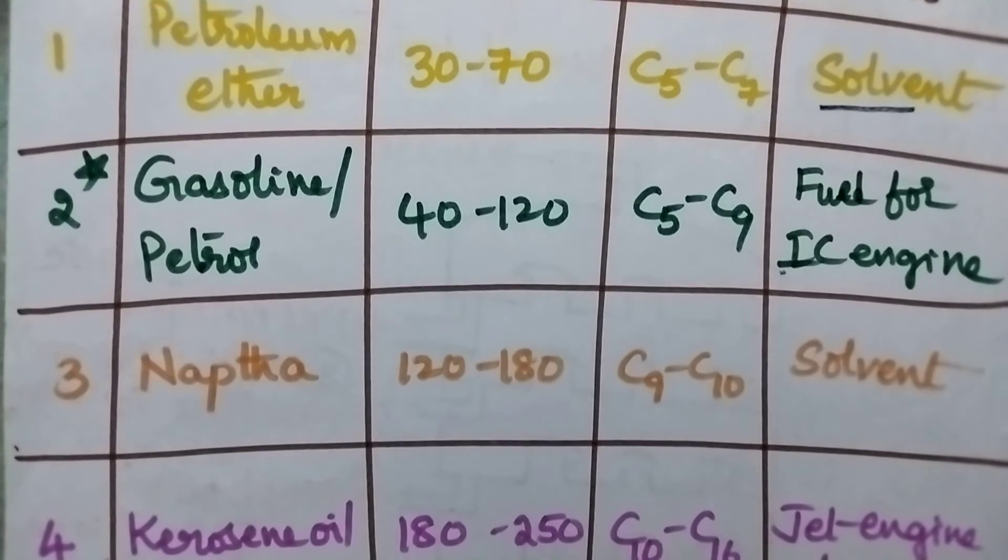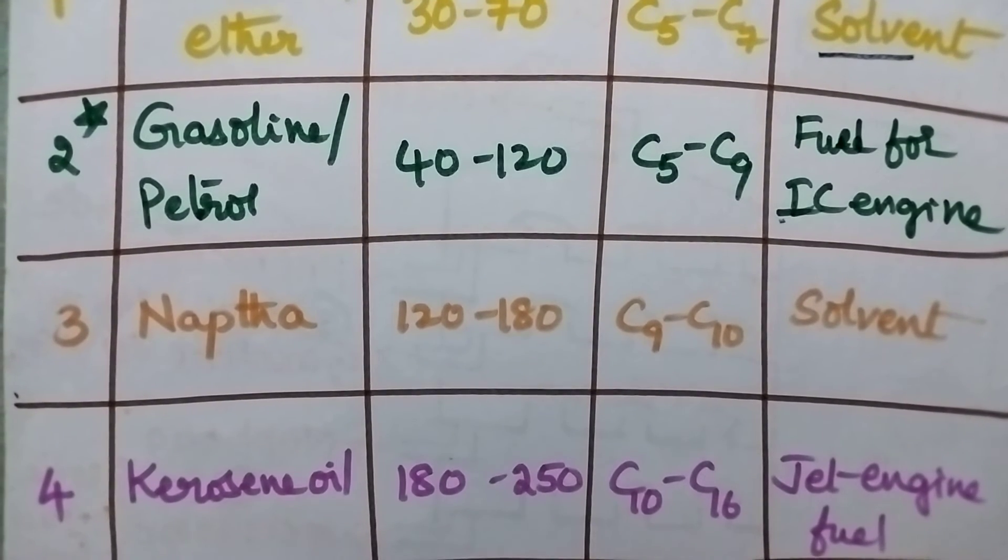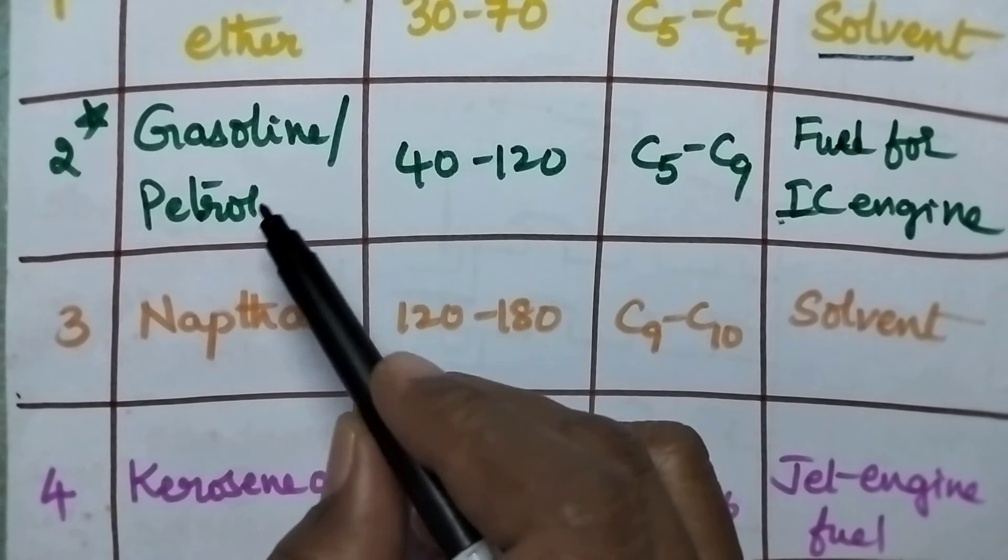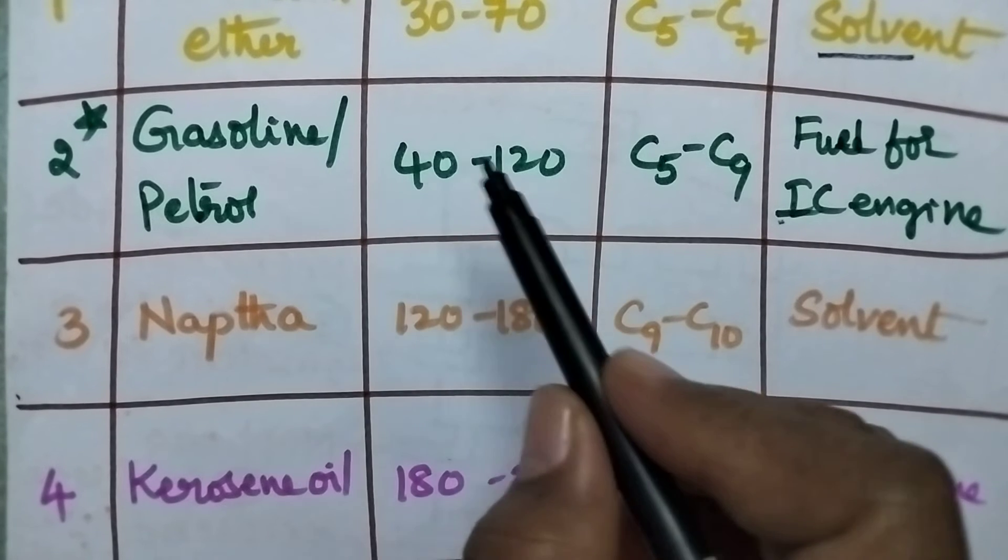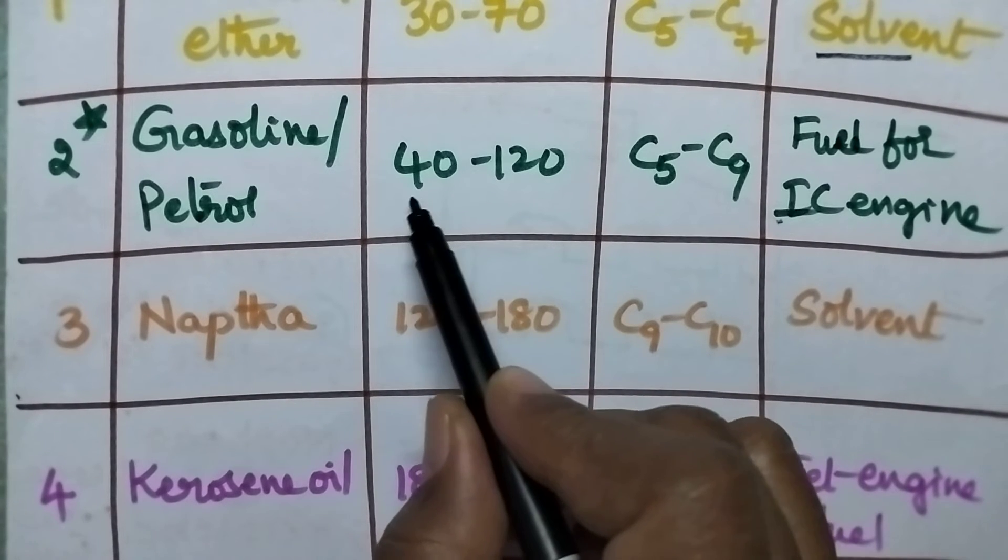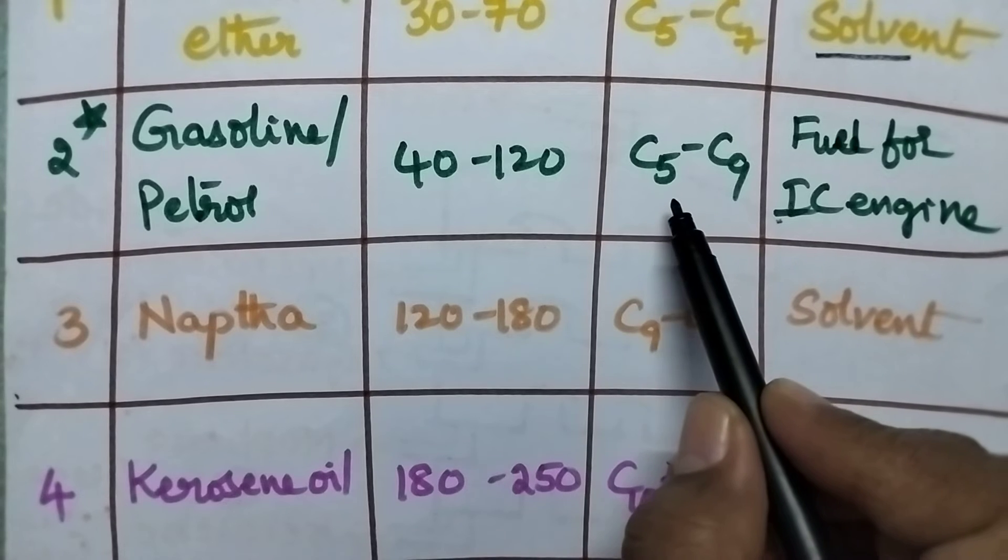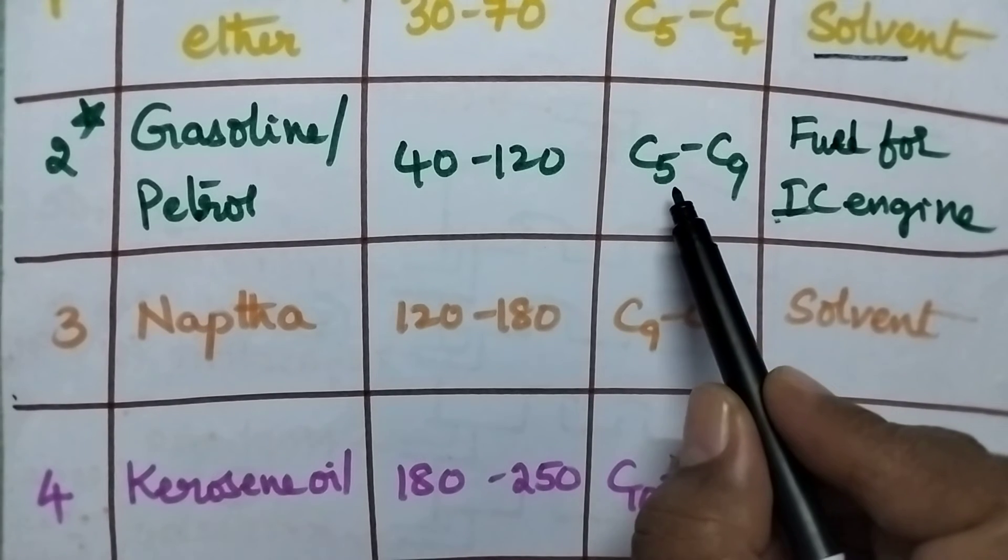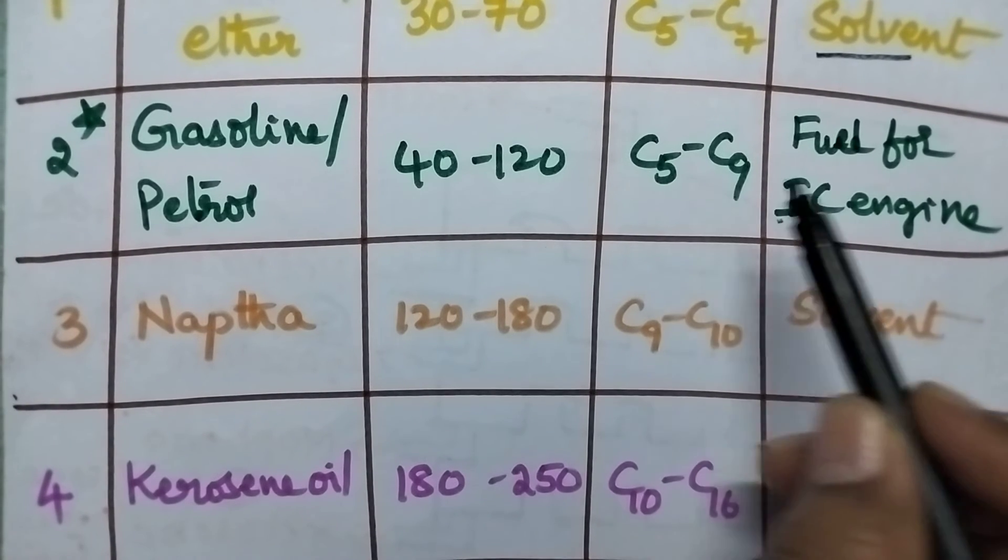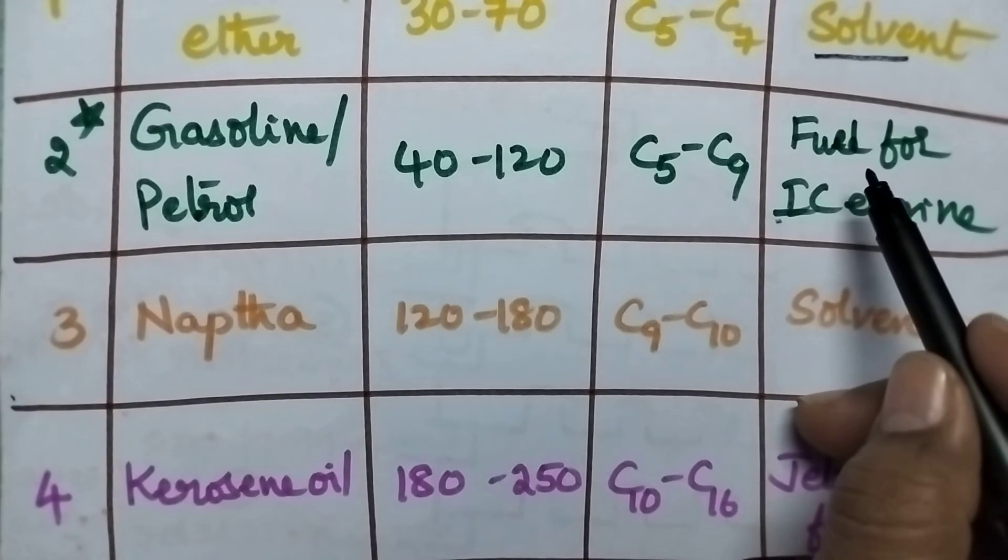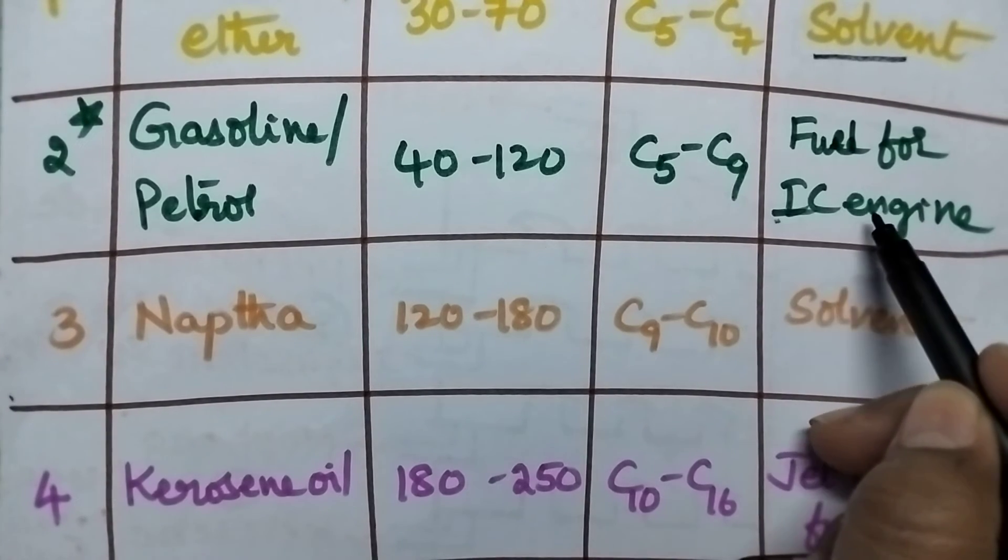The most important liquid fuel with great demand is petrol, also called gasoline. Its boiling point is around 40 to 120 degree centigrade. Here the hydrocarbons range from C5 to C9. It is the most important fuel for internal combustion engines.